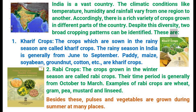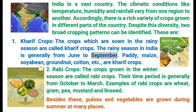These are: Kharif crops. The crops which are sown in the rainy season are called Kharif crops. The rainy season in India is generally from June to September. Paddy, maize, soya bean, groundnut, cotton, etc. are Kharif crops.